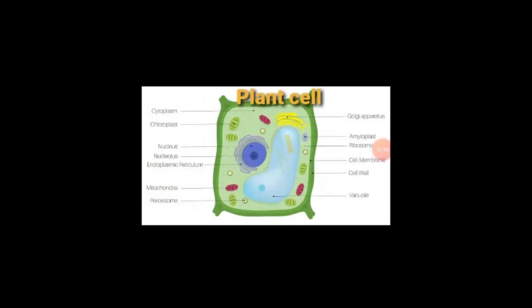Plant cells have Golgi apparatus, ribosomes, cell membrane, and cell wall, which is only present in plant cells. The vacuole is enlarged in plant cells. Chloroplasts are also present in plant cells.